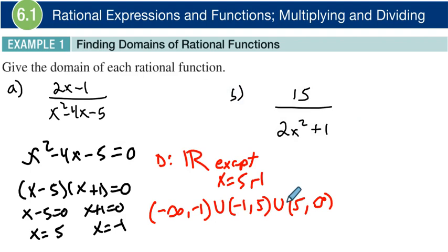And lastly, we don't use brackets. We use parentheses because it never reaches negative 1. Because if you were to plug in negative 1, then now you would have an undefined number. So that's why we don't use brackets, we only use parentheses. So that would be the domain for that one.